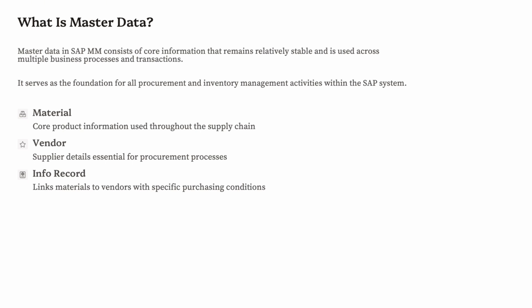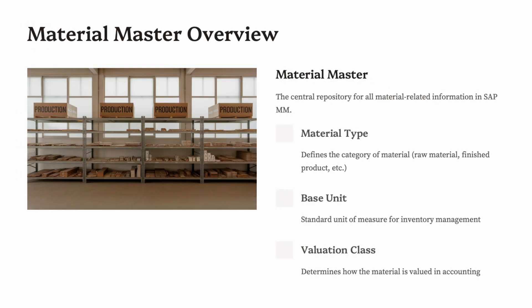There are three primary master data types in SAP MM: 1. Material Master, 2. Vendor Master, 3. Purchasing Info Record. Each of these plays a critical role and is integrated with other modules like SD, FI, and PP.